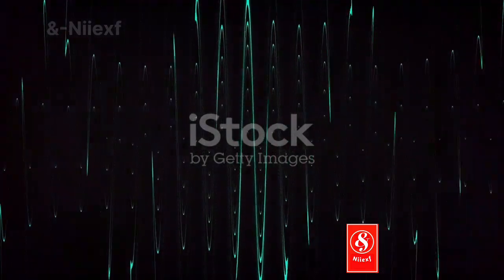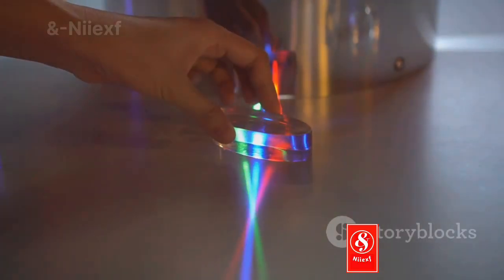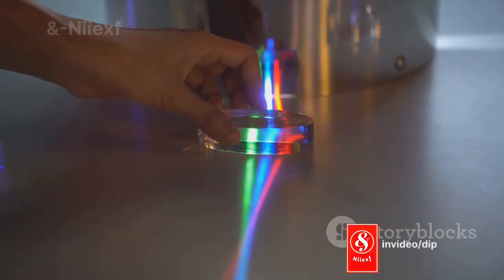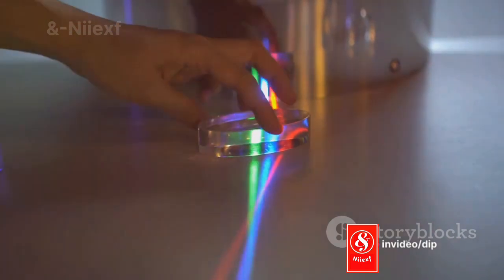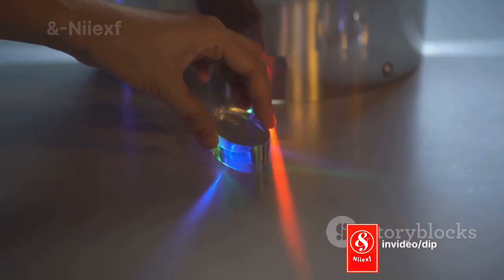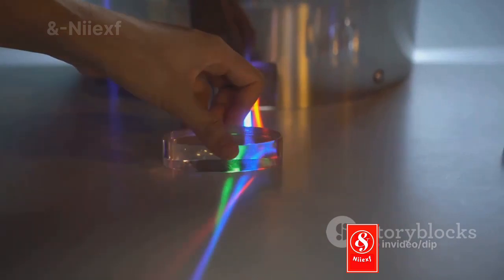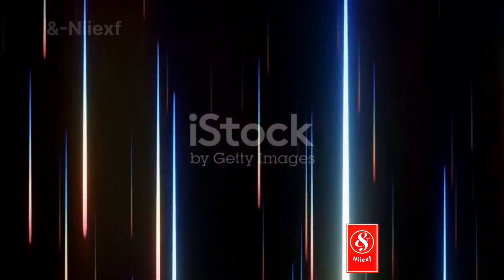But here's where things get really strange. What if we turn down the intensity of our light source so that it's only firing one photon at a time? Classical thinking would suggest we should now see two lines on the screen, right?